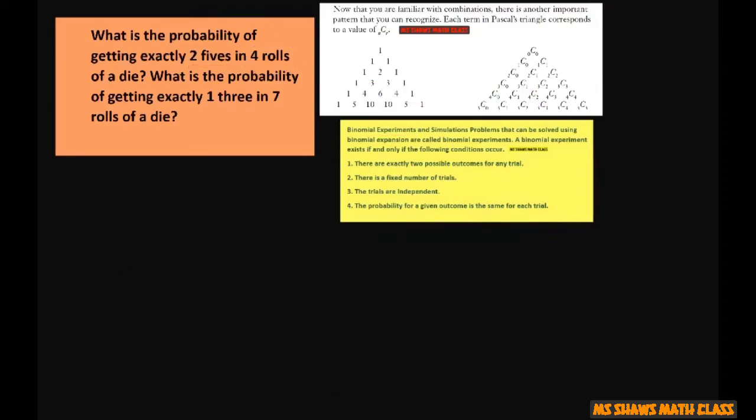Now let's try the second one, getting exactly one three. Now the probability of getting a three is one sixth, and the probability of not getting a three equals five sixths.